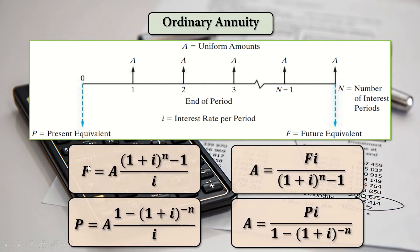These are the formulas. Finding for F, which is the future amount given A (the uniform amount): F = A × ((1 + I)^n − 1) / I. Finding for P given A: P = A × (1 − (1 + I)^(−n)) / I. Finding for A if F is given: A = F × I / ((1 + I)^n − 1). Finding for A if P is given: A = P × I / (1 − (1 + I)^(−n)).